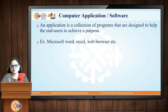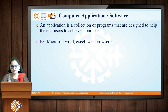Next is computer application or computer software. A computer program is a set of instructions given to the computer. Now, a computer application is a collection of such programs that are designed to help the end user to achieve a purpose. For example, when you access Microsoft Word, Excel, or any computer-related application, it is designed using a set of programs. It is not a single program — any application is a collection of different programs.